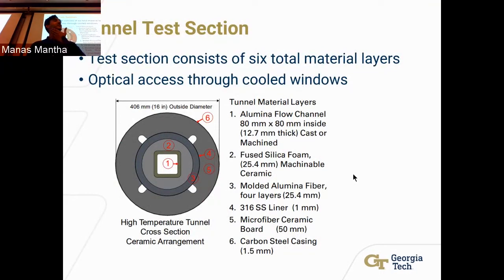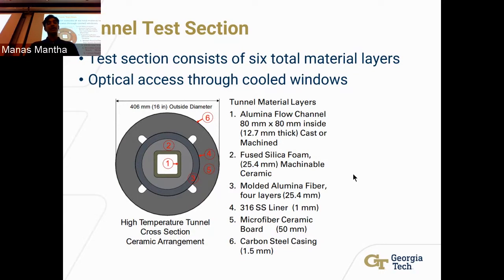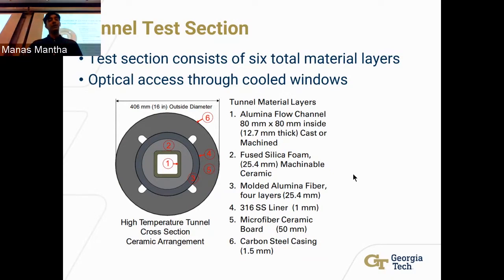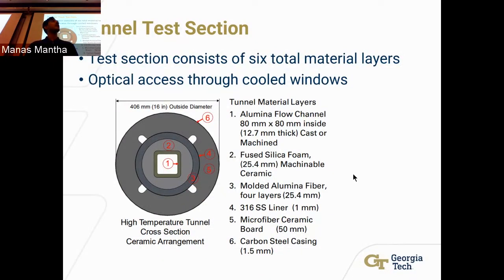The test section consists of six total layers of materials — still a plan to be fabricated, but this is the concept. The first, internal layer is an alumina flow channel, likely cast or machined. The second layer is a fused silica foam, also machinable, likely a ceramic layer. On the outer edge is a molded alumina fiber — four layers of alumina fiber — before a fourth liner layer that holds everything together. On the outside is a large section of microfiber ceramic board for insulation and structure, and finally an outer carbon steel casing.